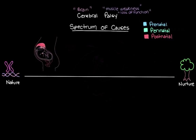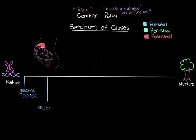Starting with prenatal events, all the way on the nature end of our spectrum, we have genetics. There are a few genetic causes of cerebral palsy where a parent inadvertently passes on a mutated gene that results in damage to one of the movement centers in the brain — though these are pretty rare. The other prenatal events fall in between nature and nurture, having more to do with the fetal environment. The first is infections — specifically congenital infections that the fetus gets from mom. One important group is the TORCH infections, a mnemonic standing for Toxoplasmosis, Rubella, Cytomegalovirus, Herpes simplex virus types 1 and 2, and Other — which includes infections like syphilis.